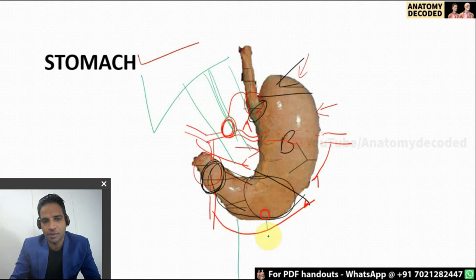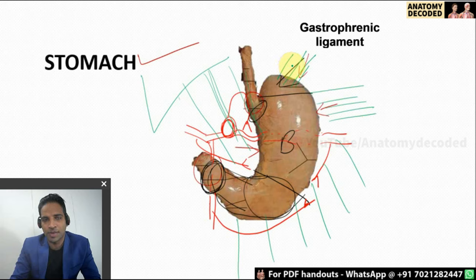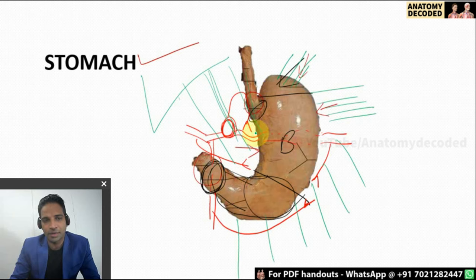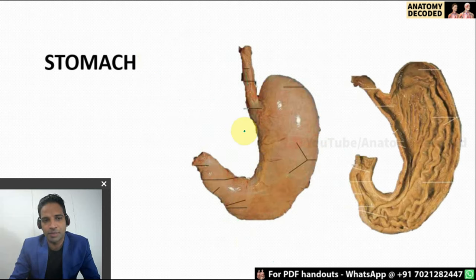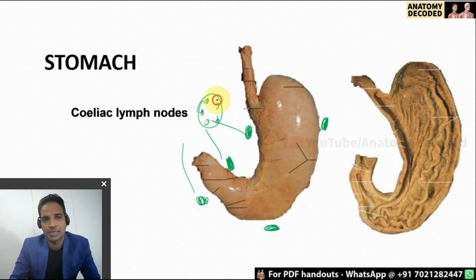Along the greater curvature, majority of the part is covered by the greater omentum, and in the upper part some goes towards the spleen — that is the gastrosplenic ligament. For the lymphatic drainage of the stomach, you can remember it in relation to the arterial supply. There are left gastric lymph nodes and right gastric lymph nodes corresponding to those arteries, then pancreaticosplenic lymph nodes, right gastroepiploic lymph nodes, and near the pylorus there are pyloric lymph nodes. From all these regions, the lymphatics ultimately drain into the celiac group of lymph nodes.